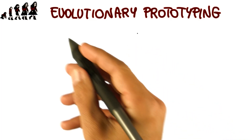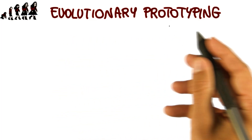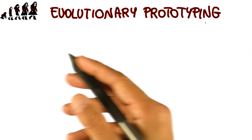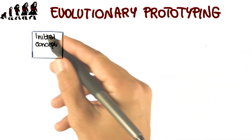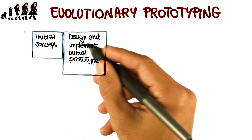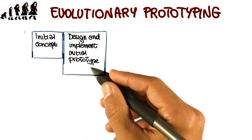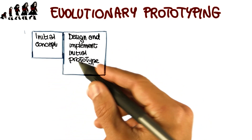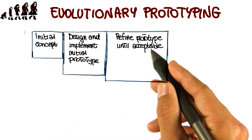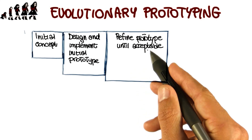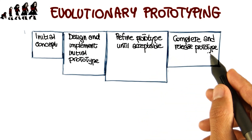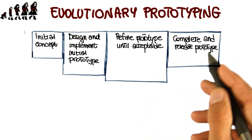The next process model I want to discuss is evolutionary prototyping, which works in four main phases. We start from an initial concept, then we design and implement a prototype based on this initial concept. We refine the prototype until it is acceptable, and finally we complete and release the prototype.